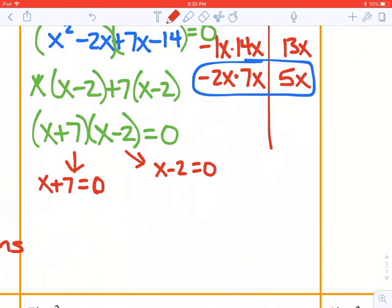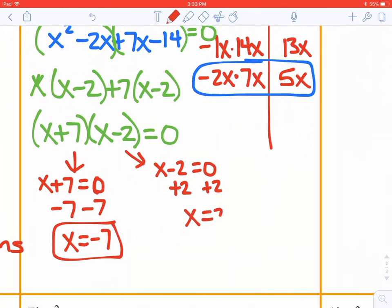If x plus 7 equals 0, we have to subtract 7, and x would just equal negative 7. Then if x minus 2 equals 0, we need to add 2 to both sides, and x would just equal 2.